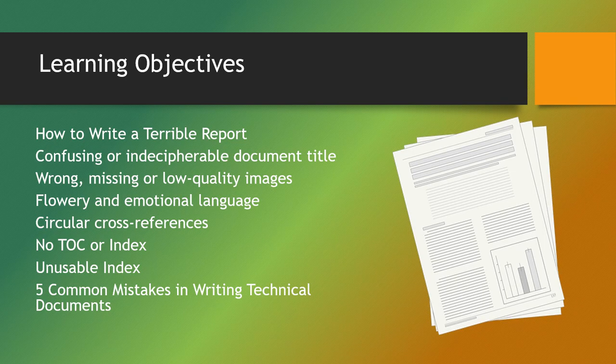Our learning objectives: we're going to talk about how to write a terrible report. Before we figure out how to write a good one, we're going to look at some things we don't want to do. We'll cover confusing or indecipherable document titles, wrong or missing low-quality images, flowery and emotional language, circular cross-references, no table of contents or index, an unusable index, and five common mistakes in writing technical documents.